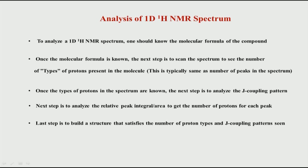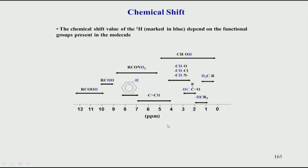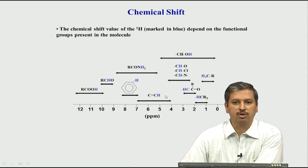Our target is that if you know the molecular formula, you know the number of hydrogens, and that number should match in the final structure you predict from the spectrum. It is good to have knowledge of where the different chemical shifts come. This is a schematic rough diagram for a few functional groups. You can see the different functional groups have very characteristic ranges of chemical shift and they almost always come in that particular range.